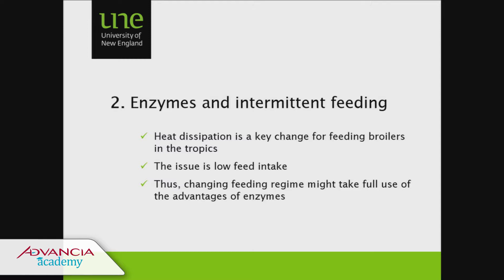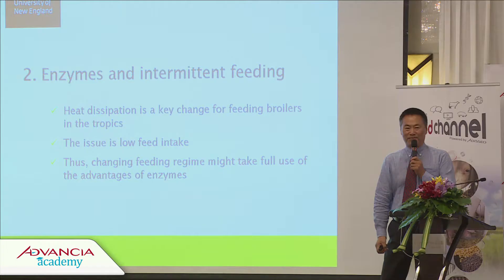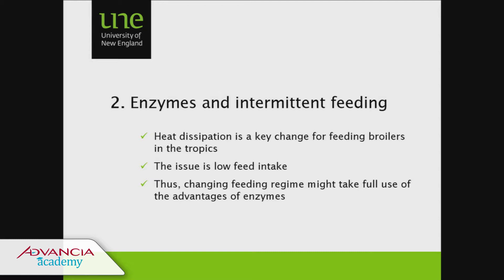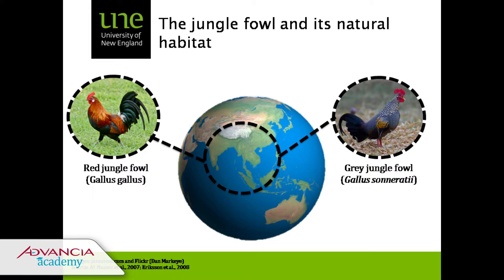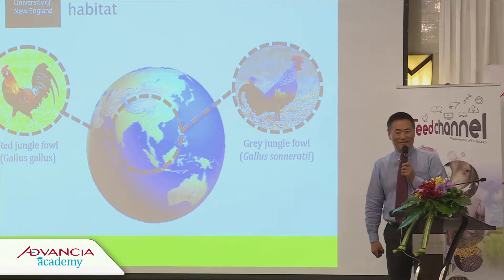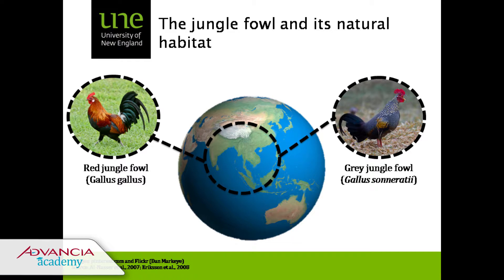That's the challenge our feed industry is going to face, and we need to embrace it and change it. Changing the feeding regime might take full advantage of enzymes. If you look at where the red jungle fowl and grey jungle fowl come from — this part of the world — it's hot, humid, and tropical. That's the ancestor of today's chicken. Those environments shaped their natural feeding behavior.